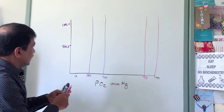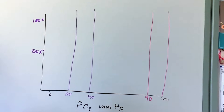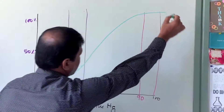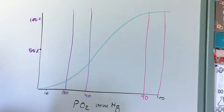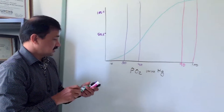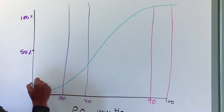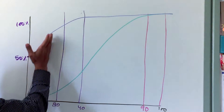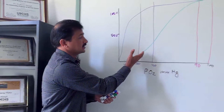Now I'll draw the oxygen dissociation curves. The curve for hemoglobin, shown in green, is sigmoidal. The curve for myoglobin is hyperbolic. These two shapes are the key things to remember: hemoglobin gives a sigmoidal curve and myoglobin gives a hyperbolic curve.